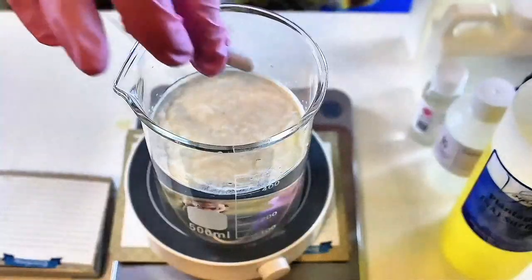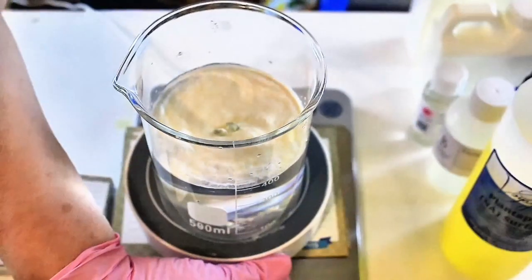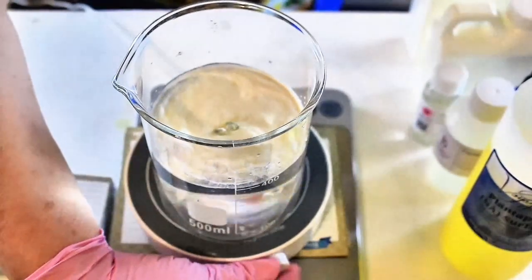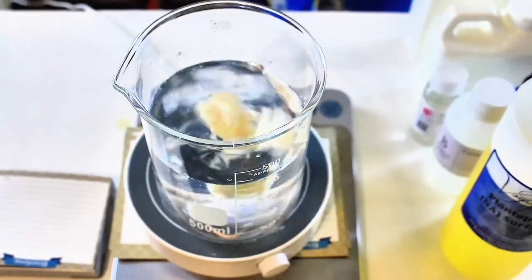But again, you could use your hand mixer. You could just stir it with just one of the beaters. Once you see that it becomes clear and you don't see any more of the little specks in it, you're ready to move on to the next phase.